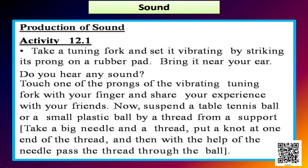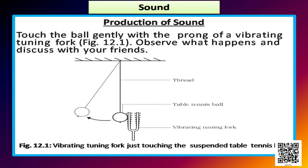In this activity, suspend a table tennis ball or a small plastic ball by a thread from a support. Take a big needle with a knot at one end and, with the help of the needle, pass the thread through the ball. Touch the ball gently with the prong of a vibrating tuning fork. You can feel the vibration in your finger when you touch the tuning fork and you can feel some kind of sound as well.